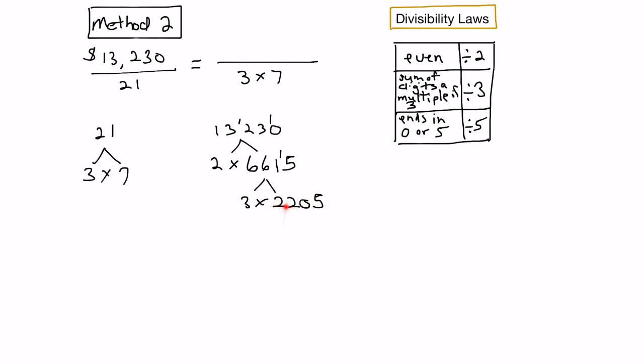We keep going with 2,205. Is it even? Nope, because it has a 5 at the end. Add the digits: 2 plus 2 is 4, plus 0 is 4, plus 5 is 9. Is 9 a multiple of 3? Yes, so it's divisible by 3 again. This would be 3 times some number. Divide 3 into 2,205. 3 into 22 goes 7 times, which is 21 with 1 remainder. 3 into 10 goes 3 times, which is 9 with 1 remainder. And 3 into 15 goes 5 times, giving us 735.